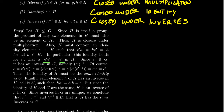If you take an idempotent element like E′, it has an inverse in the group G. So what happens when we take E′ times its inverse? That gives us the identity element E in G. But since E′ is idempotent, we can replace E′ with E′ times E′. Then by associativity, we multiply E′ by its inverse to get E, and E′ times E gives us E again. So we see that E equals E′.